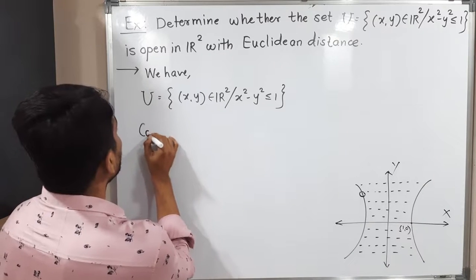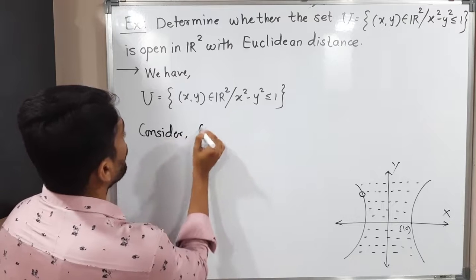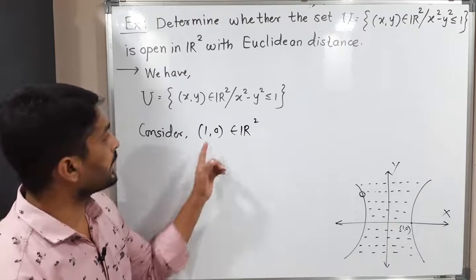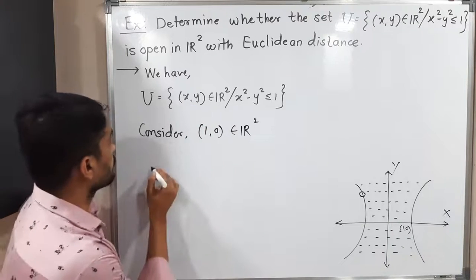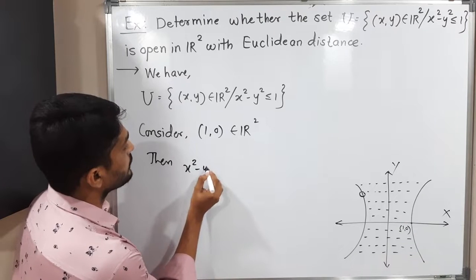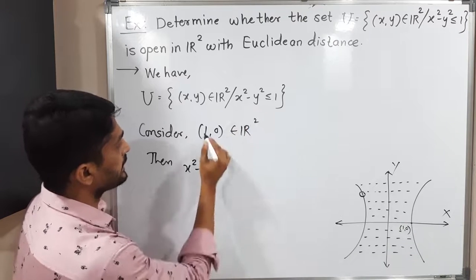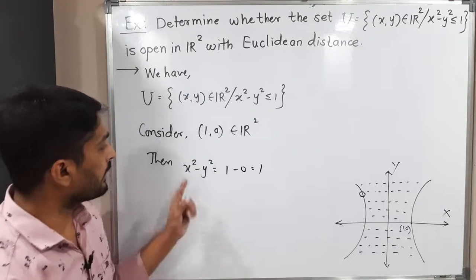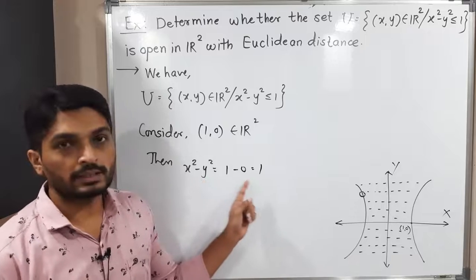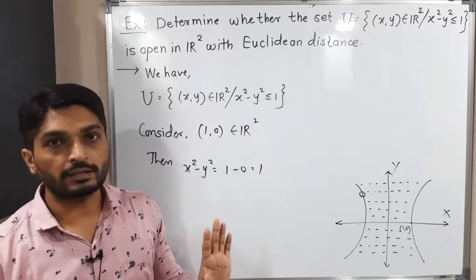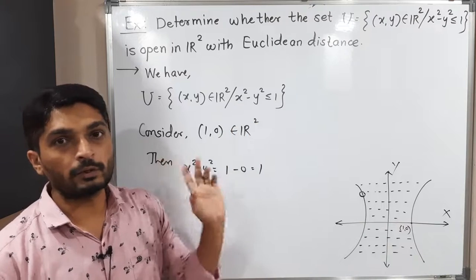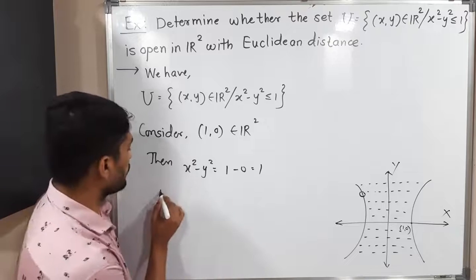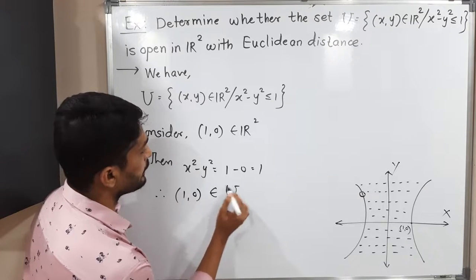Consider the point (1, 0) in R². First, I will show that this point is an element of U. Let us check the condition: x² - y² = 1² - 0² = 1 - 0 = 1. So x² - y² = 1, which satisfies the condition since we want less than or equal to 1. Therefore, (1, 0) is an element of U.